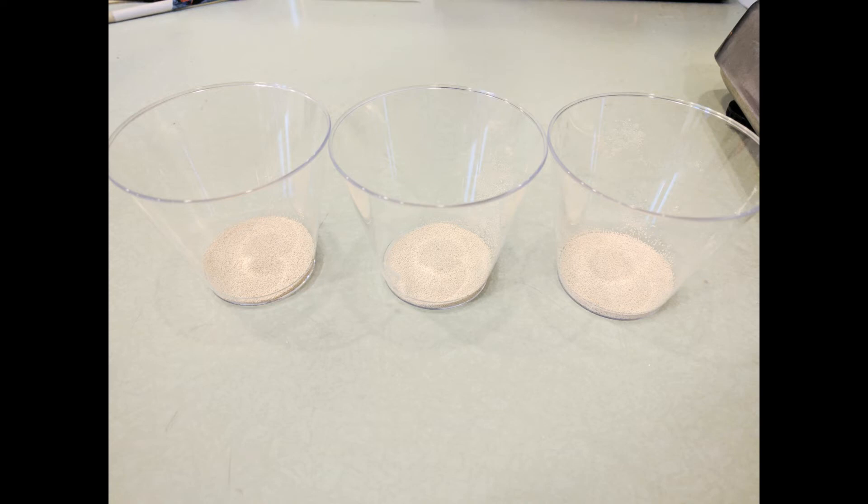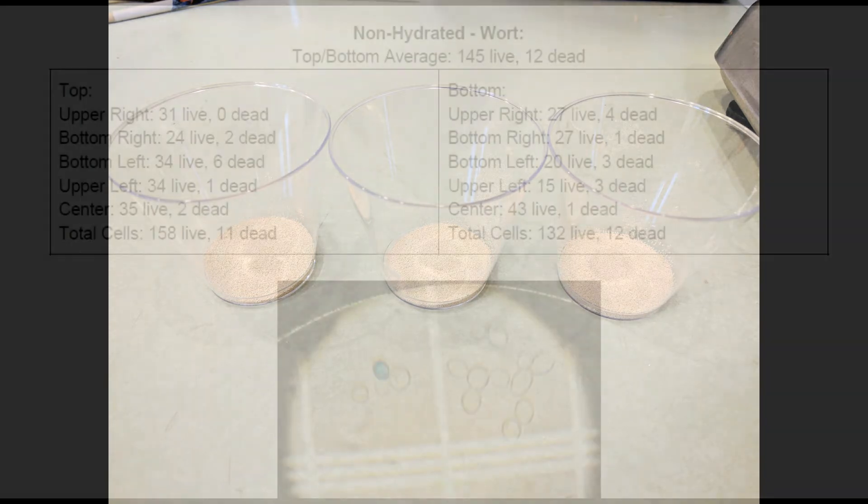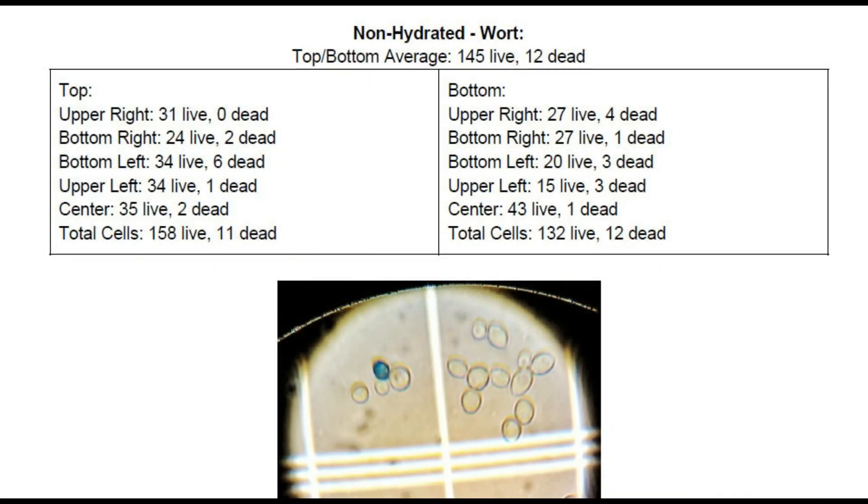So it was really quite surprising that after I did the count, the non-hydrated yeast actually came back at 92 percent. That's 92 percent of all the cells that I counted were alive, totally contradicting basically everything that I'd read in all of the Brewer's Association books. And mind you, I'm not saying that the data in there is bad, but it was different from what I got.